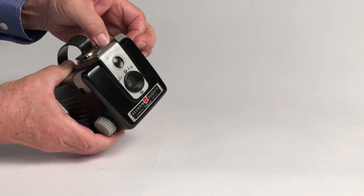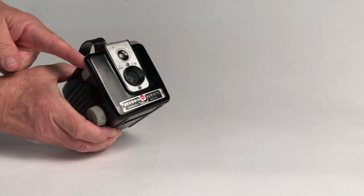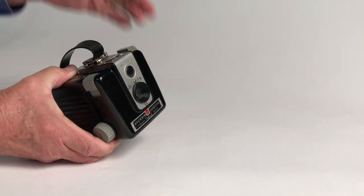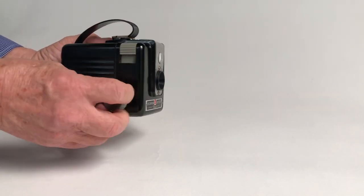This here pulls up and gives you a time exposure, so as long as I hold that down, the lens is open and will expose for night photography or something special you want to do. This is the advance level.